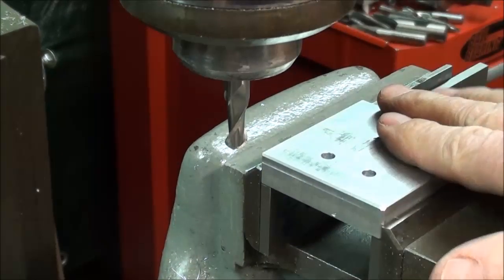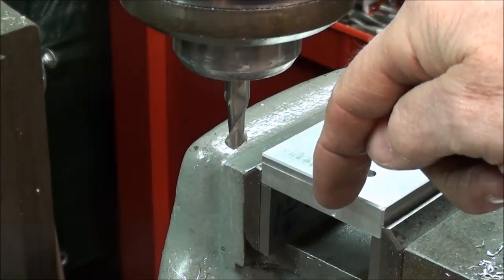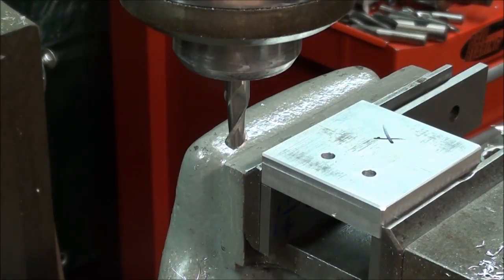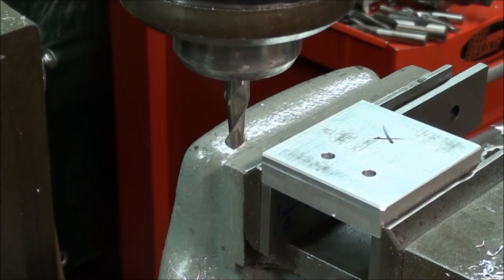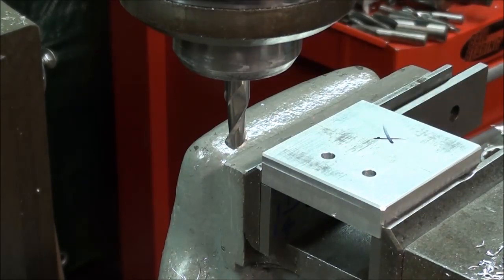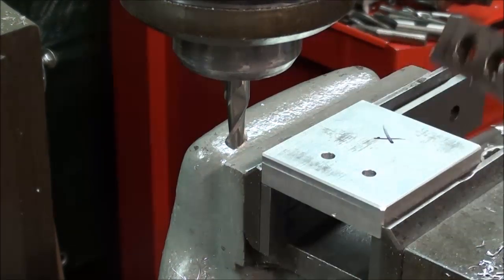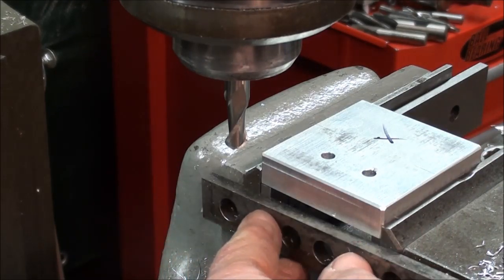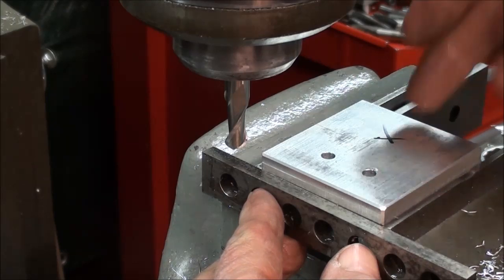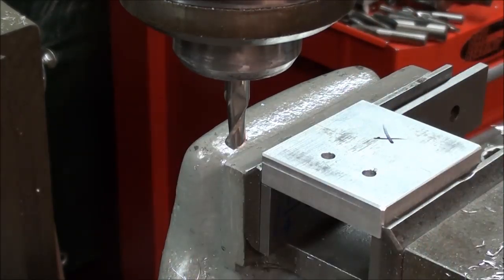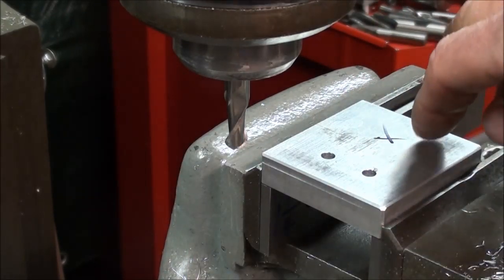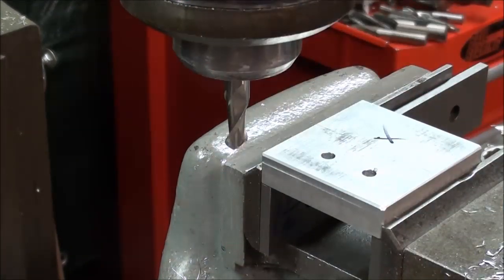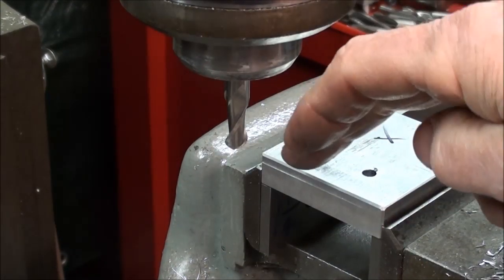I've already determined the depth and the feed that I want by my sample piece here. It's about 100 thousandths each way. As I rotate this I will each time use this as a stop - loosen up the work, bring it up against the stop so it'll be consistent on all four sides. I won't change any of the settings on the XY or the depth.